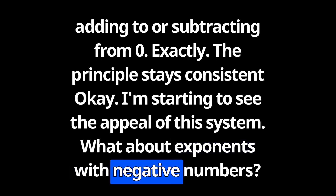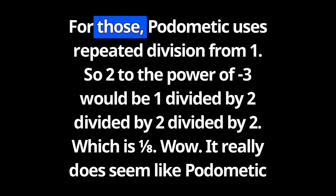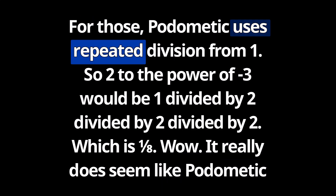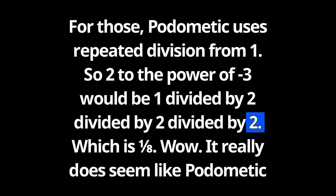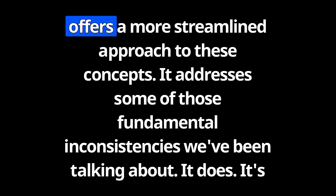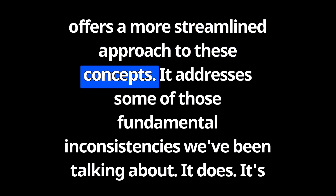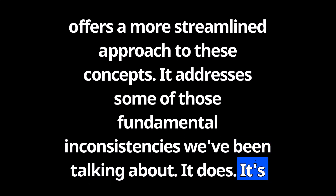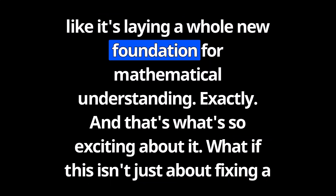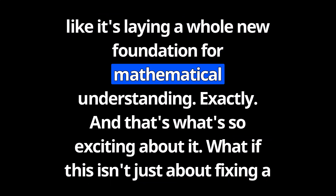What about exponents with negative numbers? For those, Podomedic uses repeated division from one. So two to the power of negative three would be one divided by two divided by two divided by two, which is one eighth. It really does seem like Podomedic offers a more streamlined approach, addressing those fundamental inconsistencies. It's like it's laying a whole new foundation for mathematical understanding.